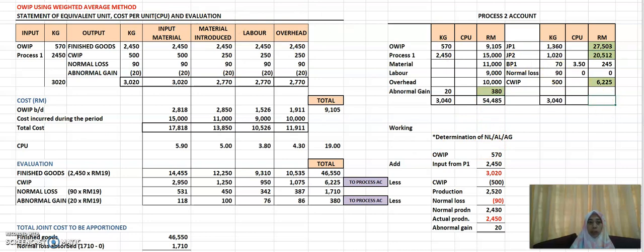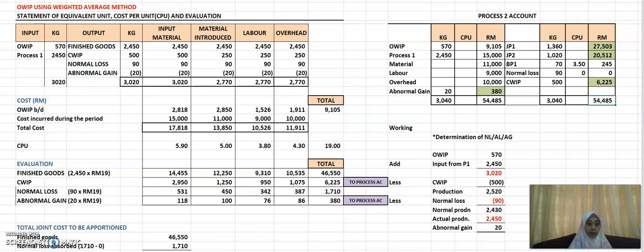Your process account should now be balanced. Hopefully this gives you a better understanding of how to prepare for joint products and byproducts. The statement format depends on the question, and for opening WIP treatment you can use either the FIFO or weighted average method depending on the information given. That wraps up the syllabus for process costing — thank you very much.